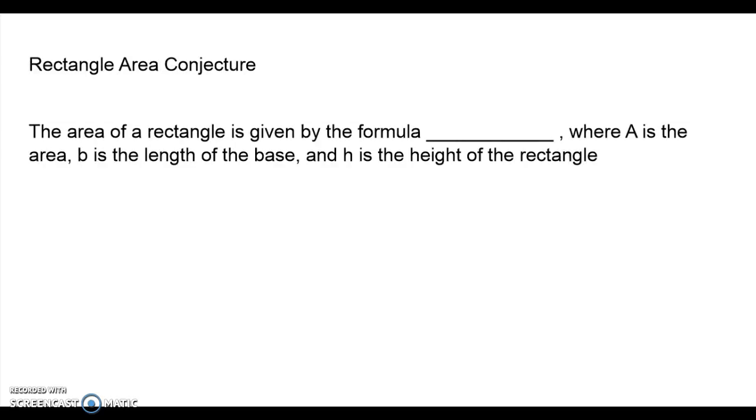Rectangle area conjecture. Our first conjecture for area and the area of a rectangle is given by the formula, I hope most of us already know this. A equals base times height, where A is the area, B is the length of the base, and H is the height of the rectangle. So if we have a rectangle here, base times the height would give us our area.